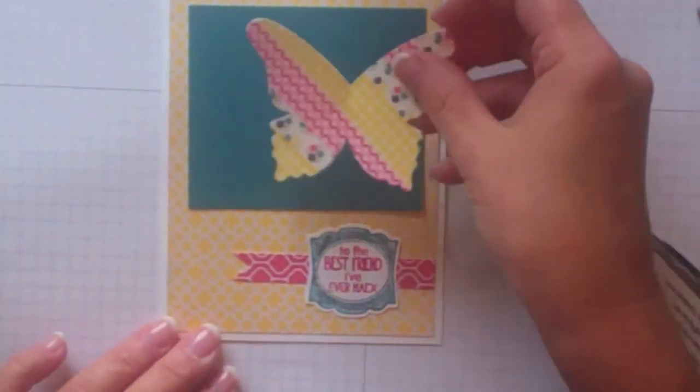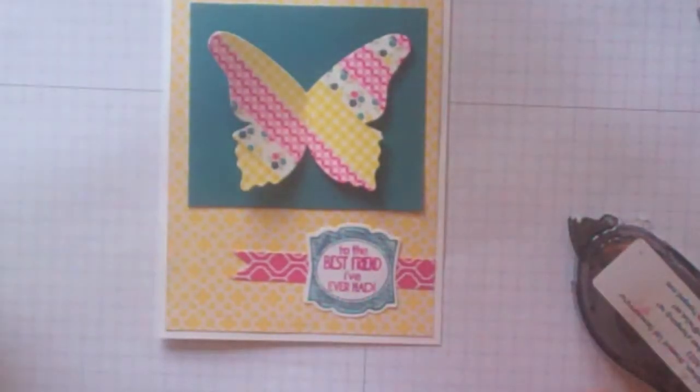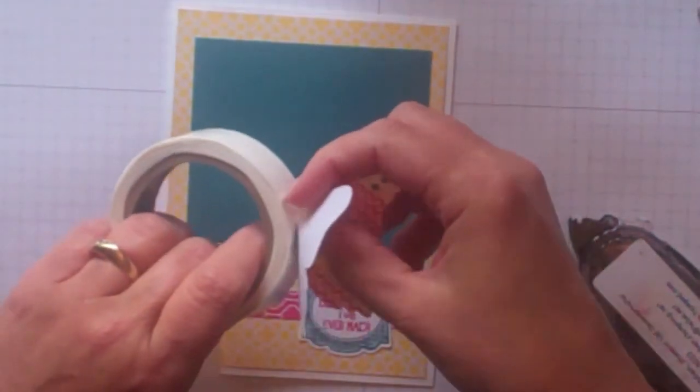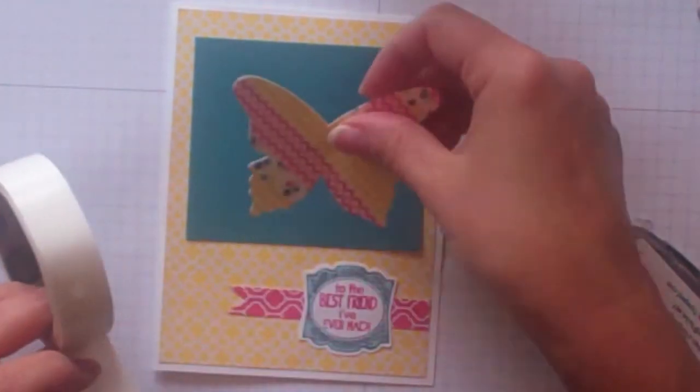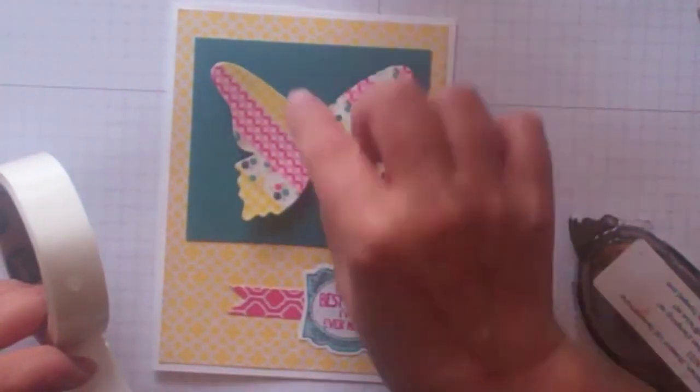And then lastly we've got our little label stamp that we stamped and punched out. The last thing I'm going to do is just add my butterfly and the easiest way to do that is with the glue dot. Put the glue dot right in the center there like so. And maybe one more and just stick them on like so.